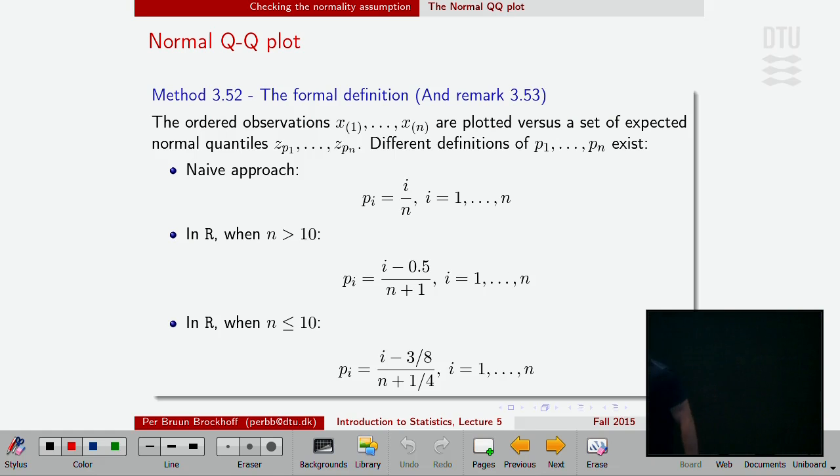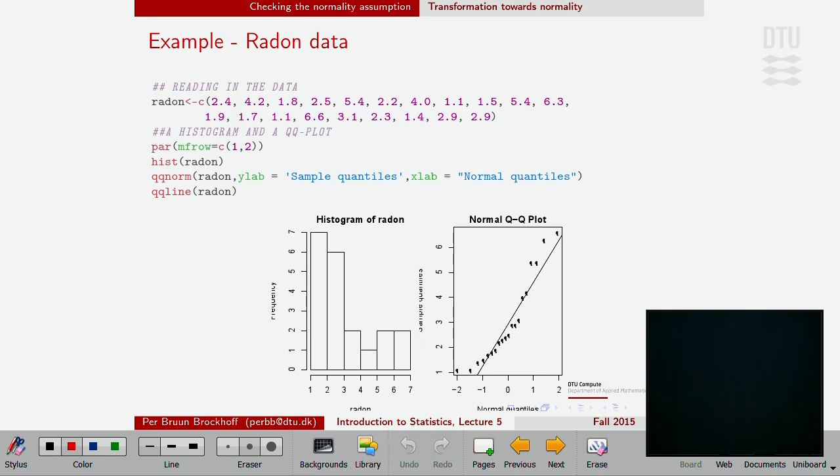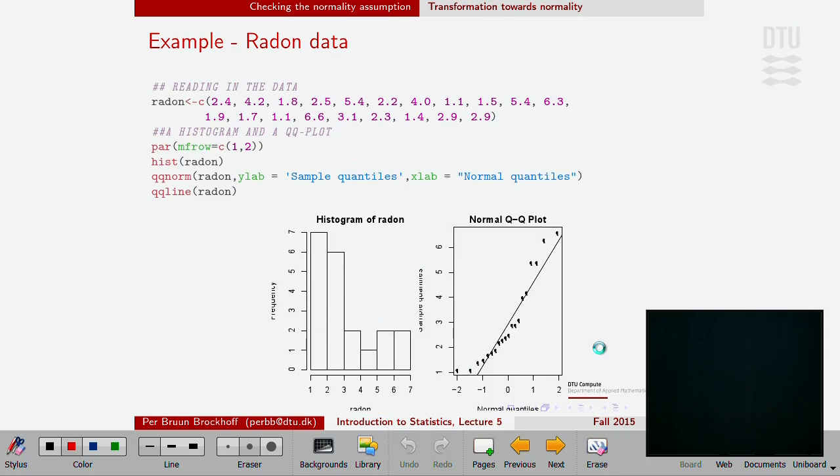Those QQ plots, the details of them are given in a method that I reproduce here. I'm not going to dwell on it because there are different ways of detailing it. It's the ordered observations on one side and the expected quantiles on the other side, normal quantiles, so we compare with the right normal. There are different ways to define which probabilities should be used to find those. The naive thing is this one, R uses either this one or this one. That's actually the QQ plot thing that we finished there, checking for normality.